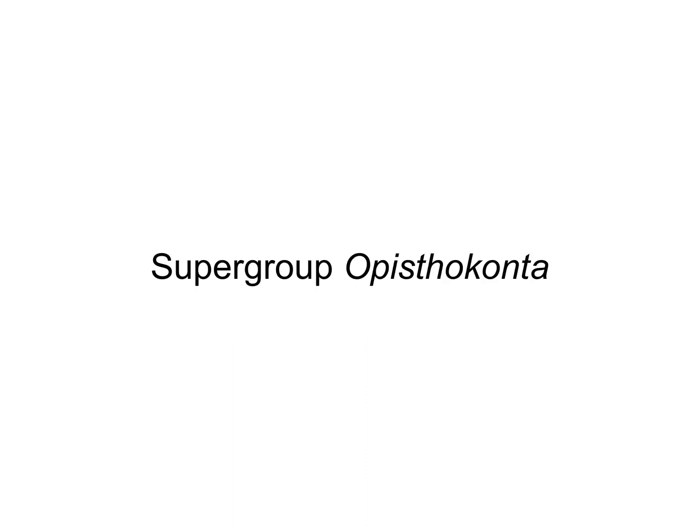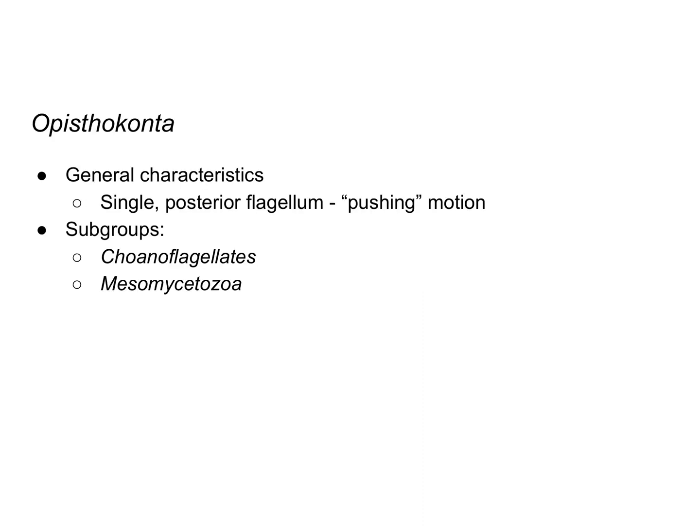In this video, we're going to talk about the protists in the supergroup Opisthokonta. One defining characteristic of the protists in this group is a single posterior flagellum, which produces a pushing motion. A flagellum can do a corkscrew movement that helps the protist swim through its environment.